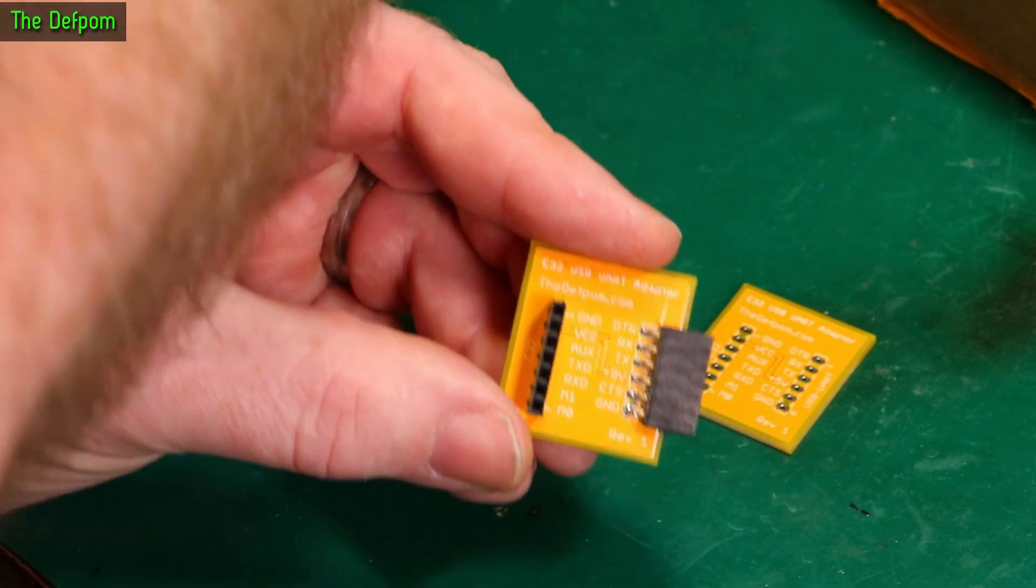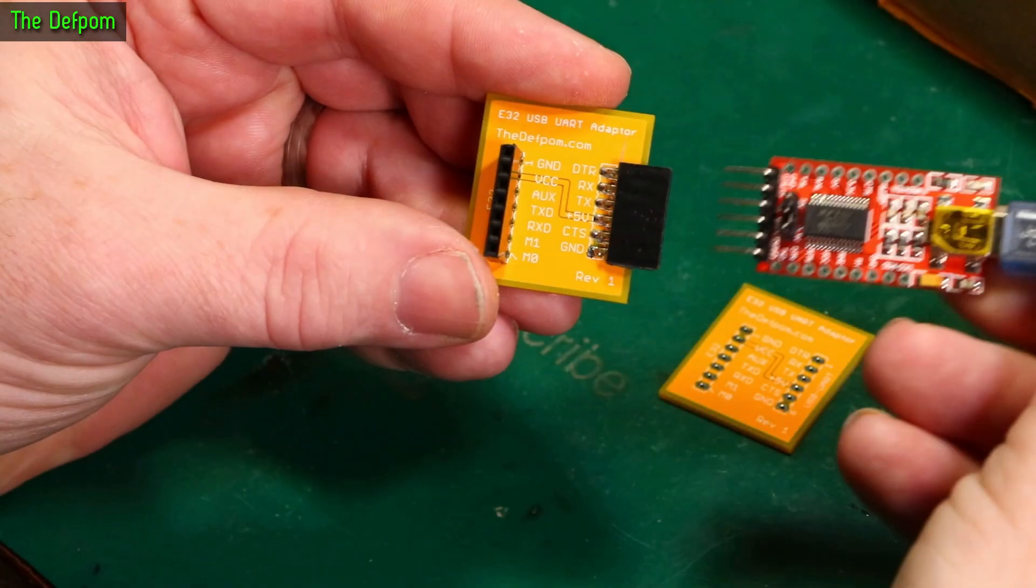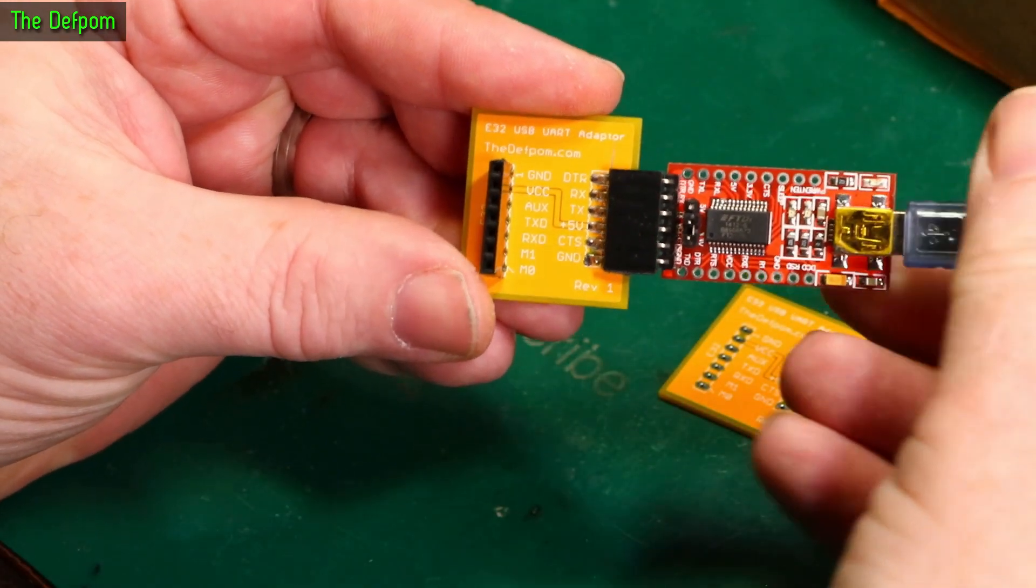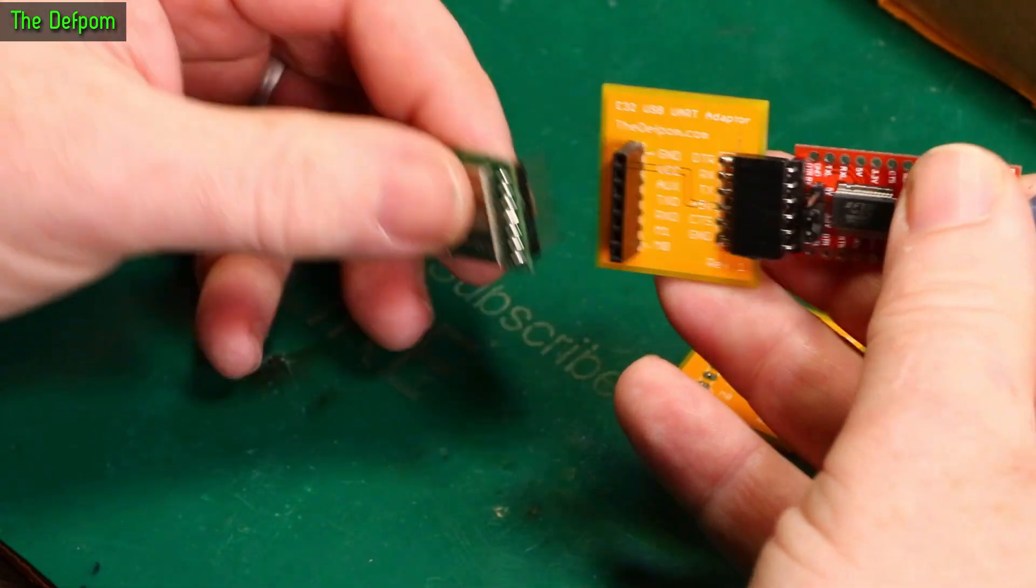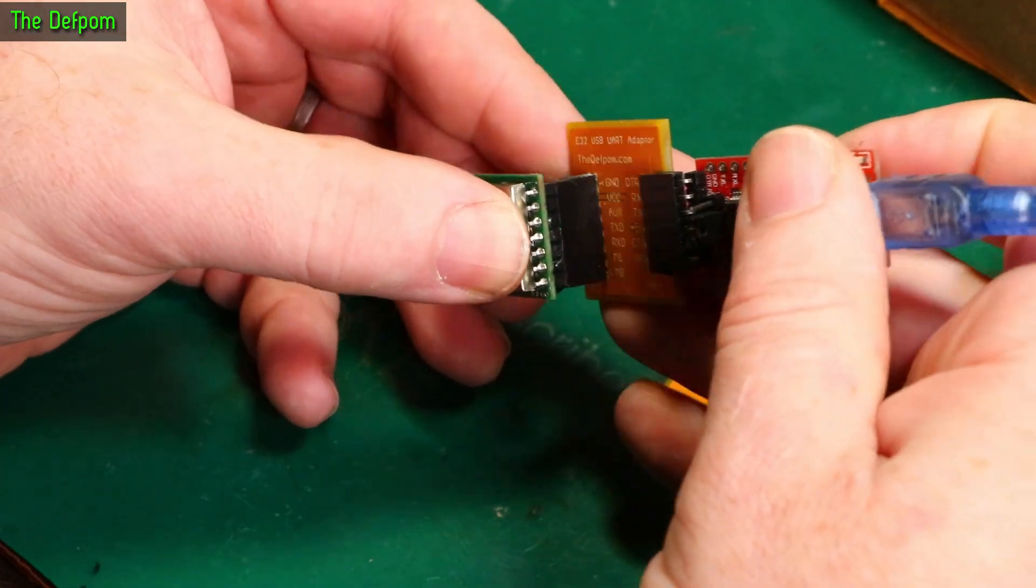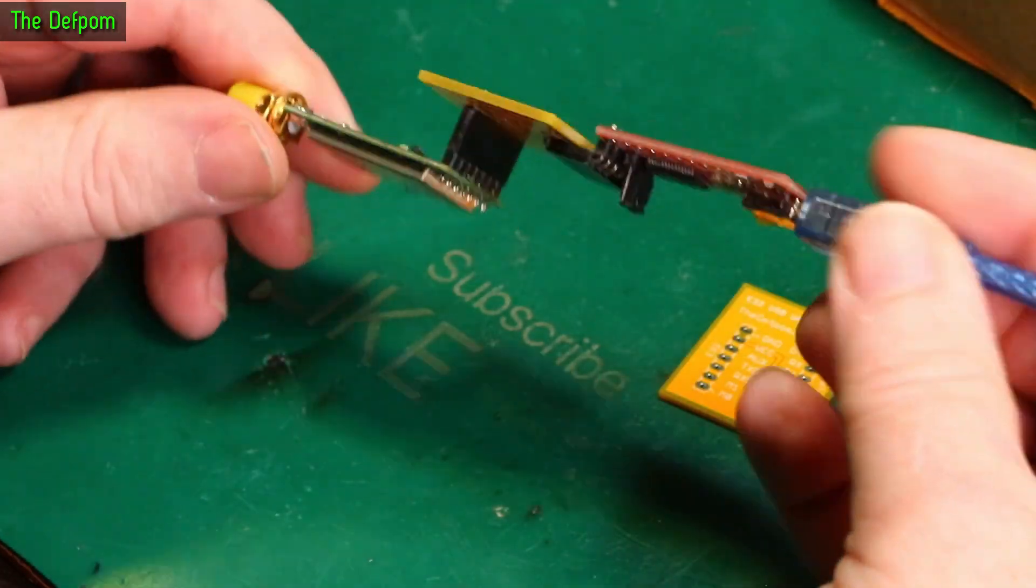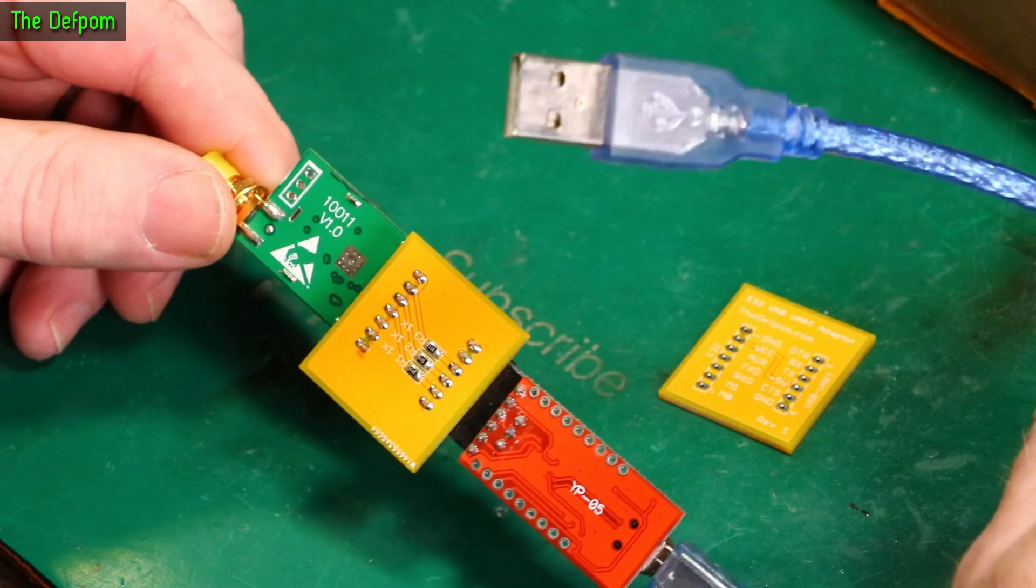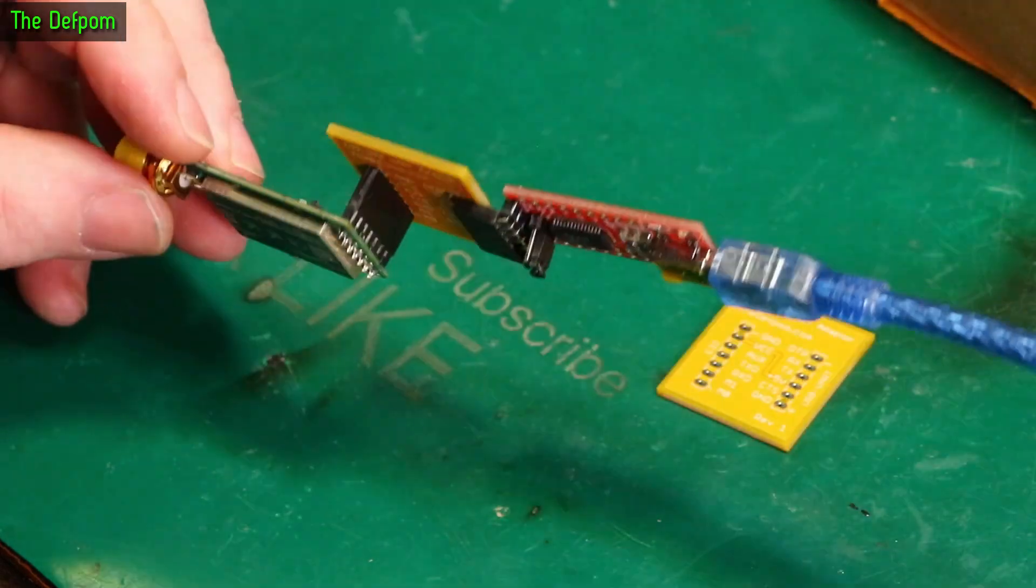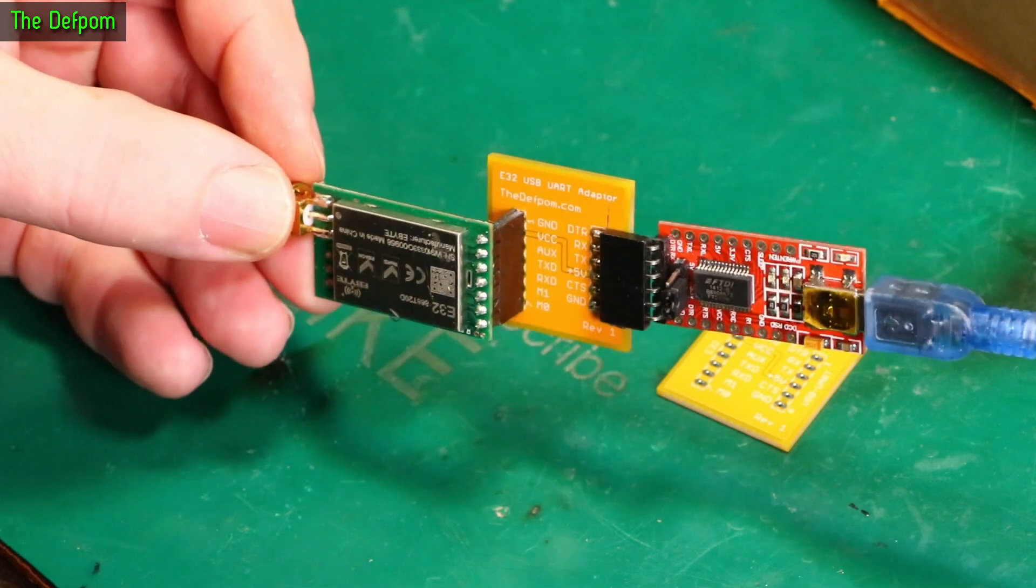And the idea. So on the side header here, you get the programmer. That plugs in this side. Like that. And on the top header here, you get the E32 module. And you plug it in this side. Like that. And there you go. Simple as that. You plug this into your USB port on the computer. And you can use the E-byte software to program the thing. And it saves messing around with a lot of things. Just makes it a lot easier.